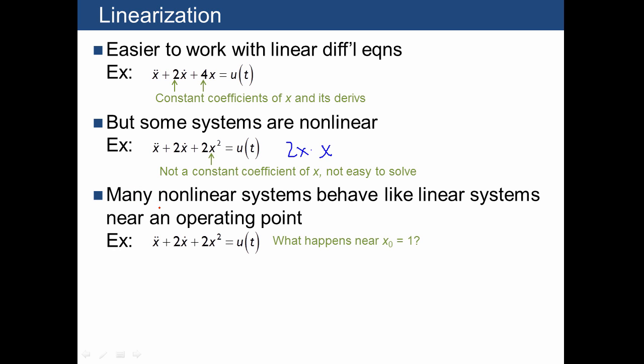The idea is that many non-linear systems actually behave like linear systems if you're talking about relatively small variations near an operating point. So if we were to look at this system, we might ask what happens near the operating point—in other words, what happens if x stays in the neighborhood of 1.